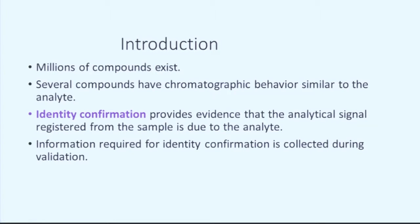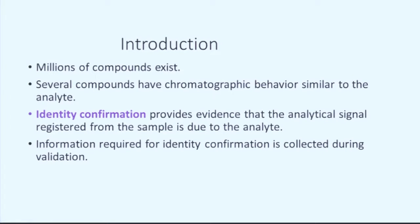Information required for this confirmation is gathered during the validation. There are two principal ways for identity confirmation. The first relies on chromatography and mostly on retention times.